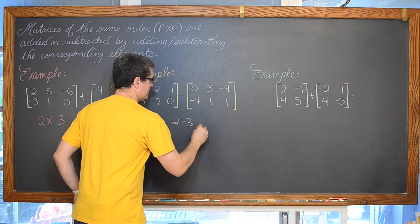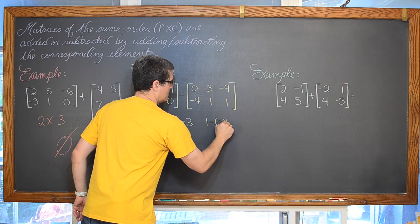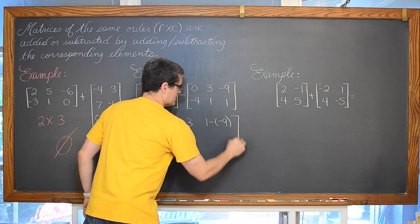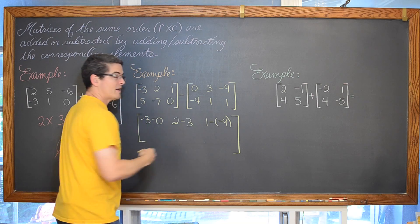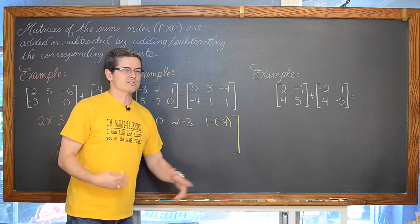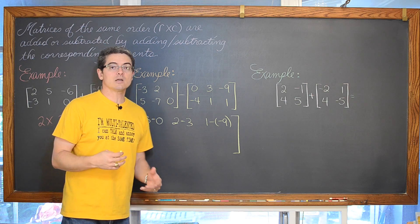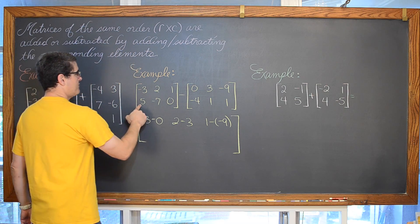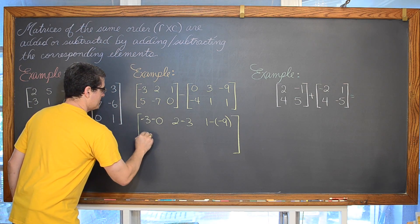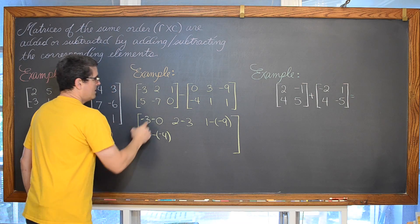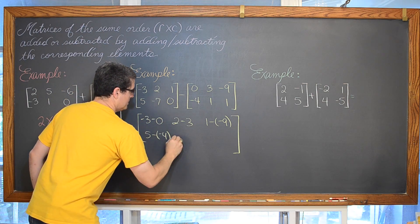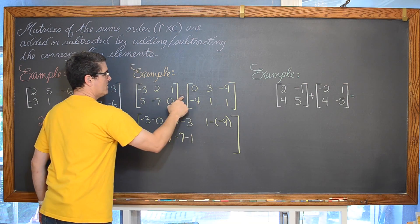So we are going to have one minus negative nine. It is a little bit harder to miss those two negatives when you are actually writing out all of the subtraction, but you are probably pretty comfortable with addition and subtraction and you are not going to want to do this every time you add or subtract matrices. Five minus negative four, negative seven minus one, and zero minus one.